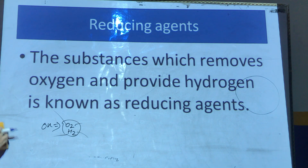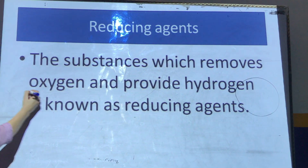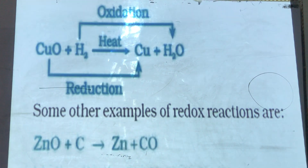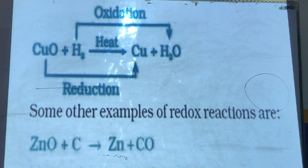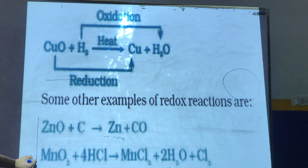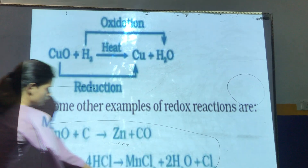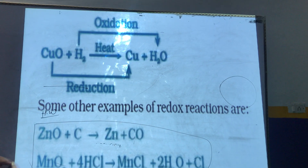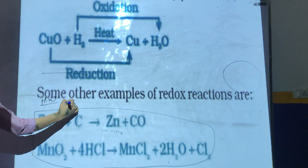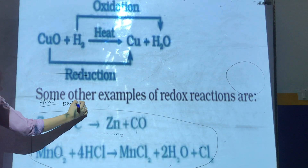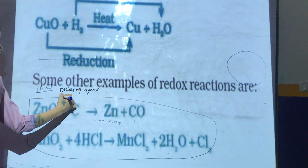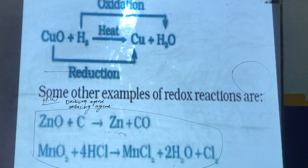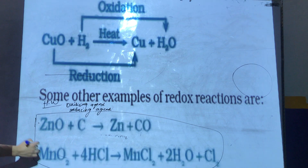What are reducing agents? The substances which remove oxygen — removing oxygen clearly means that they provide hydrogen — so they are called reducing agents. This is the slide given as homework. You have to tell me which element is the oxidizing agent and which one is the reducing agent in both of the two equations.